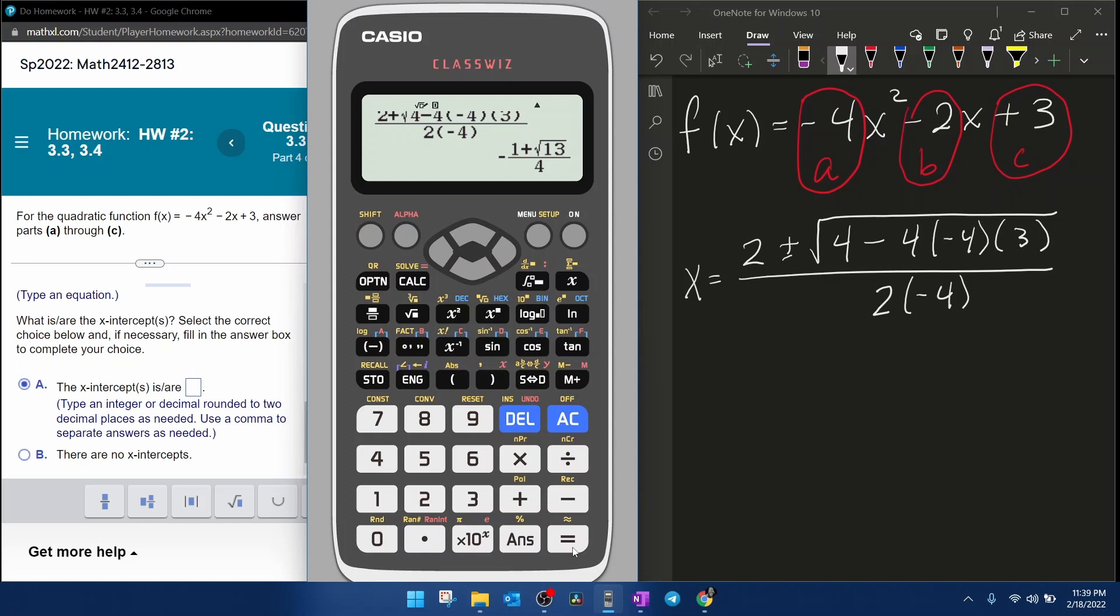Notice if you read the instructions here in the background, it says round to two decimal places. So on our class whiz, to force the decimal, we're going to click the SD button. And then we're going to round that to two decimal places. Negative 1.15.